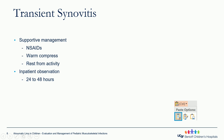Once a diagnosis of transient synovitis is made, it is generally treated with anti-inflammatory medications to help with systemic symptoms. Local treatments such as warm compresses are also helpful with symptoms, and a short course of activity modification usually helps as well. At our institution, we often admit these patients for 24 to 48 hours to trend their inflammatory markers and make sure they're getting better and that septic arthritis is completely ruled out.